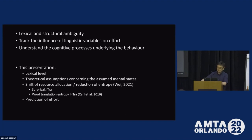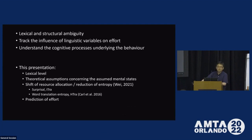This is part of a larger project which looks at the lexical and structural ambiguity in translation and post-editing, aiming to track the linguistic variables on the effort of translating and post-editing, and also to conceptually understand the cognitive processes underlying the observed behavior. In this presentation, I'm going to focus on a very small part of it, which is on the lexical level, and review some of the theoretical assumptions concerning the assumed mental states, which lay the foundation of using entropy to describe the process of lexical choice. I will mainly talk about two perspectives which might theoretically quantify cognitive load. One is the shift of resource allocation, and the other is reduction of entropy.